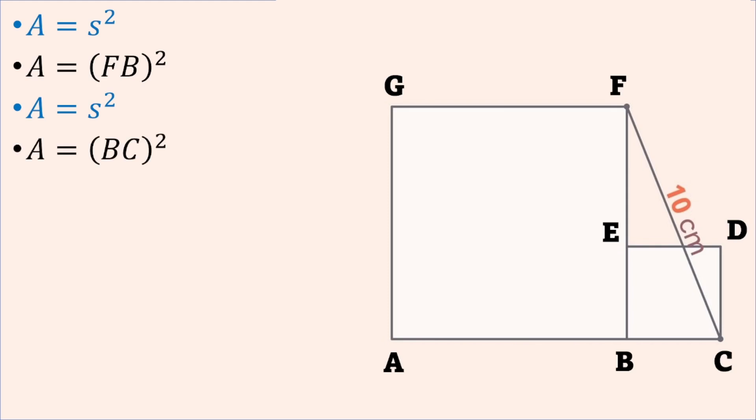But I also know that if I look at the triangle FBC, that is a right angle triangle and the Pythagorean theorem will apply. Therefore, the square of FB plus the square of BC will be equal to the square of FC.